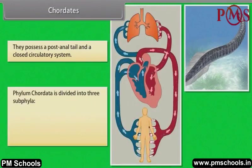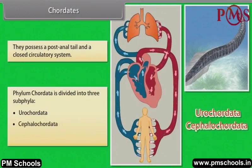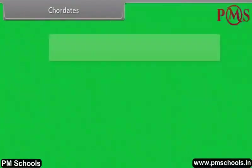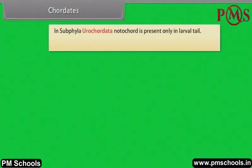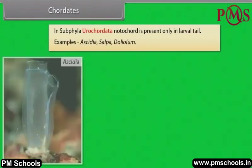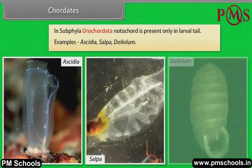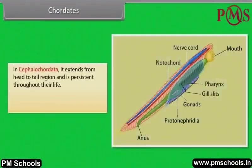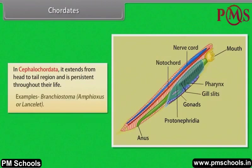Phylum Chordata is divided into three subphyla: urochordata, cephalochordata and vertebrata. In subphyla urochordata, notochord is present only in the larval tail. Examples: Ascidia, Salpa, Doliolum. In cephalochordata, it extends from head to tail region and is persistent throughout their life. Examples: Branchiostoma, Amphioxus.